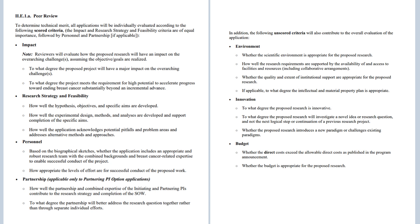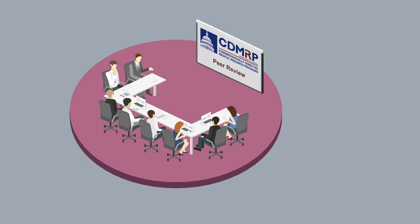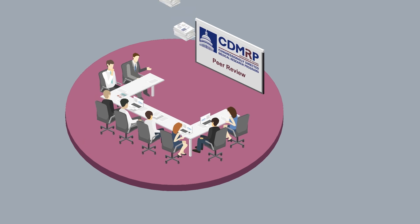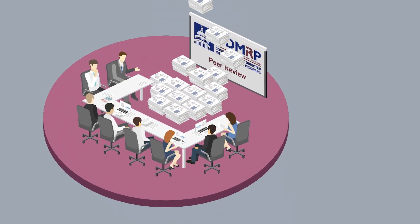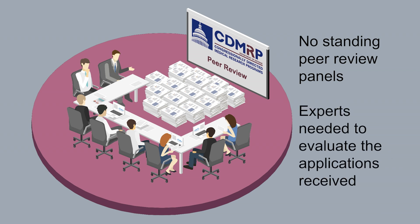Applicants should also note whether the scored criteria are weighted equally or whether the criteria are listed in descending order of importance, and take this into consideration when composing their applications. CDMRP programs recruit peer reviewers after receipt of the full application submission, meaning there are no standing peer review panels. The peer review panels include the experts needed to evaluate the applications received that fiscal year.